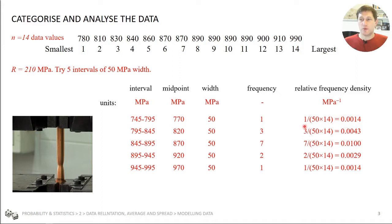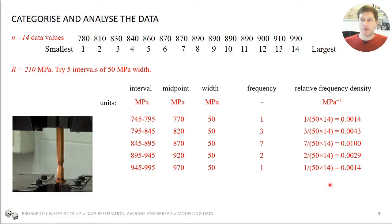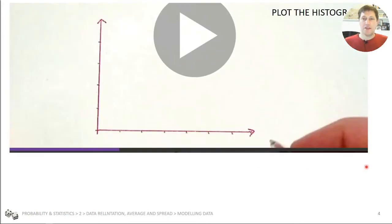The units: frequency has no unit, the width is in megapascals, and n has no unit, so the relative frequency density is in megapascals to the minus 1. We do that for all ranges, coming up with a relative frequency density for each, and that's something we can then plot.